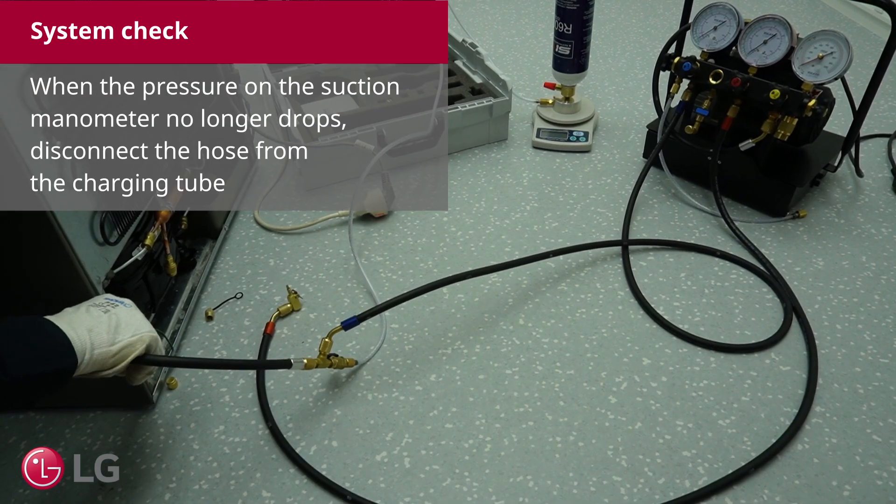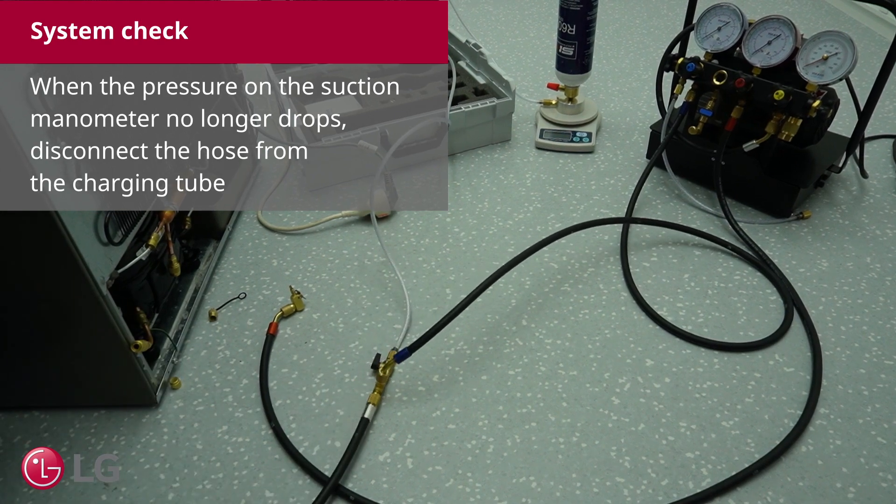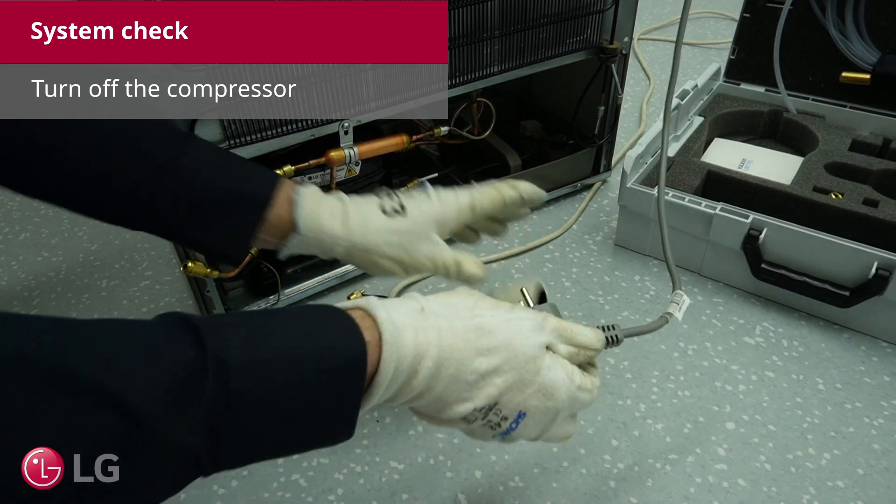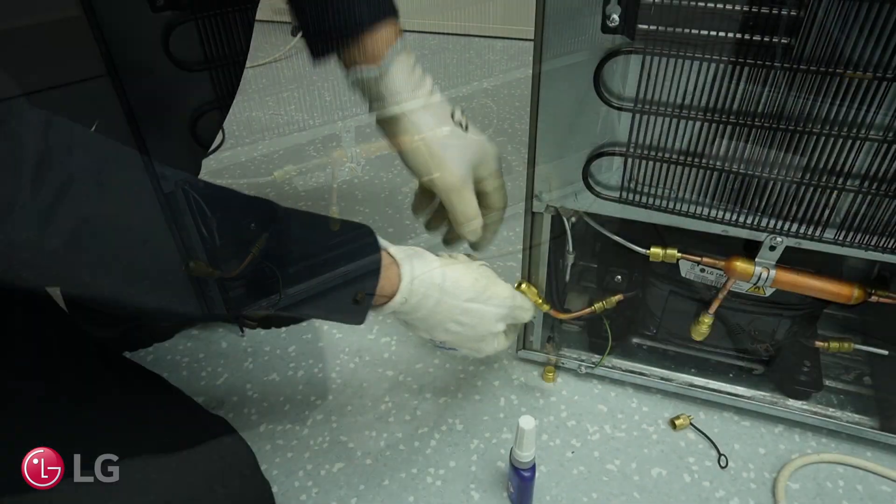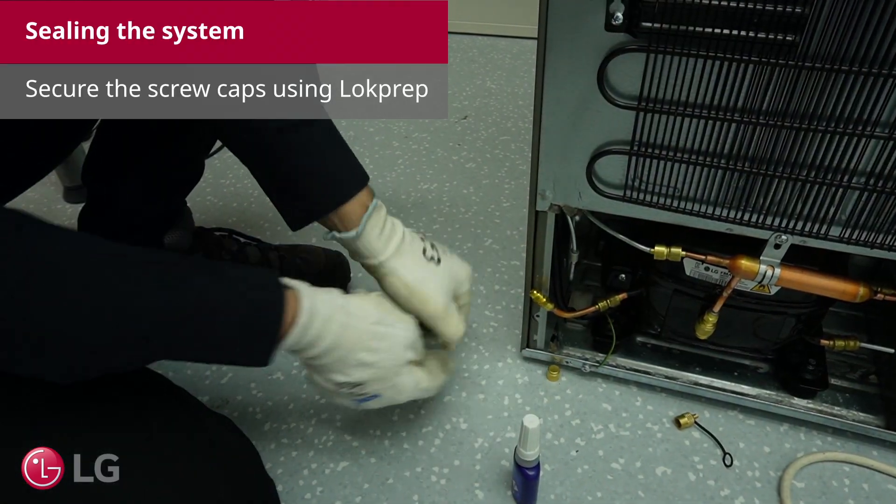When the pressure on the suction manometer no longer drops, disconnect the hose from the charging tube. Turn off the compressor. Secure the screw caps using lock prep.